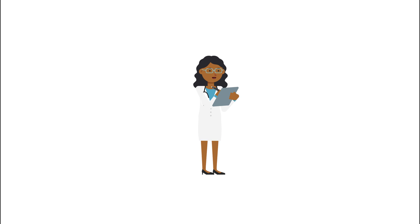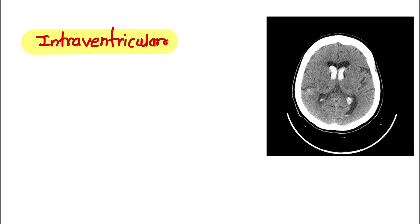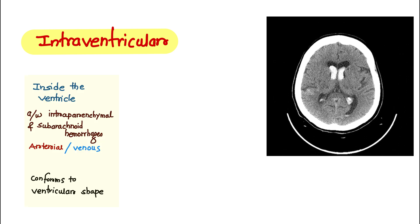If Sara presents with a hematoma that appears to be inside the ventricle, it is called intraventricular hemorrhage. It is associated with intraparenchymal and subarachnoid hemorrhage. The source can be arterial or venous. It conforms to the ventricular shape and can present with acute sudden-onset headache, nausea, or vomiting.